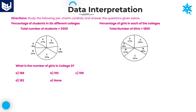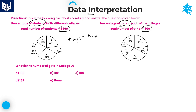Percentage of students in six different colleges — A, B, C, D, E, F. The first pie chart is talking about the total number of students, whereas the second pie chart shows the percentage of girls. The first one is percentage of total students. The second one is percentage of girls in each and every college, and the total number of girls is also given.